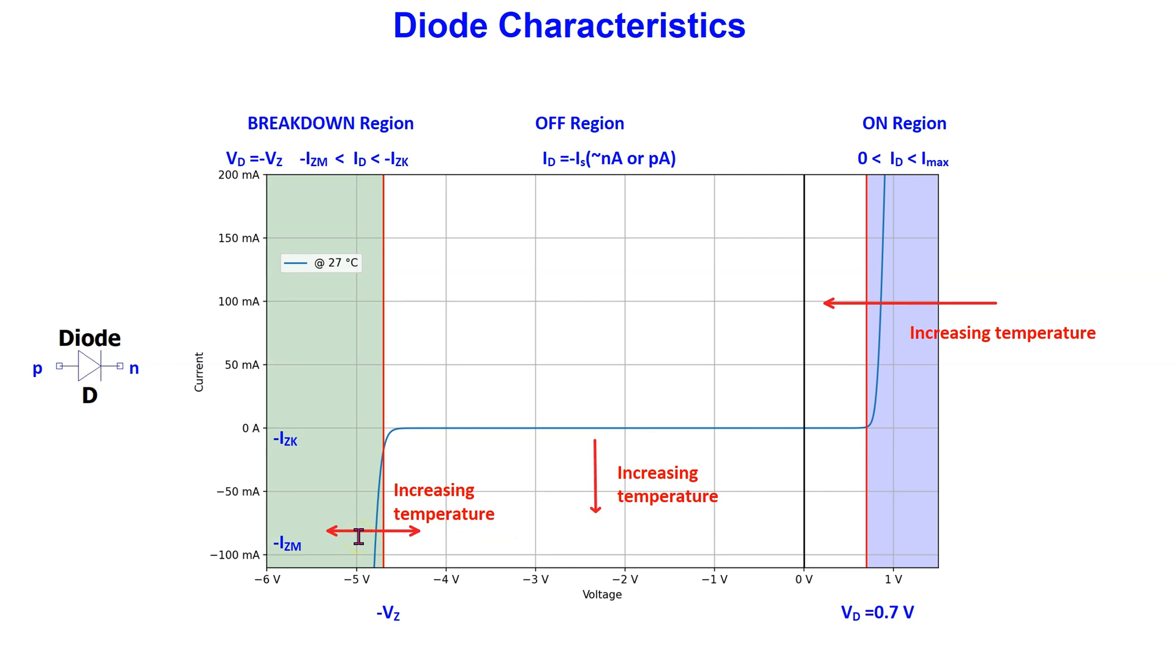For a zener diode, increase in temperature can increase or decrease the breakdown voltage depending upon the zener voltage.